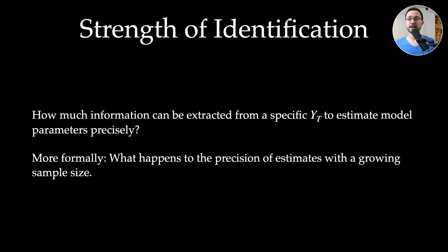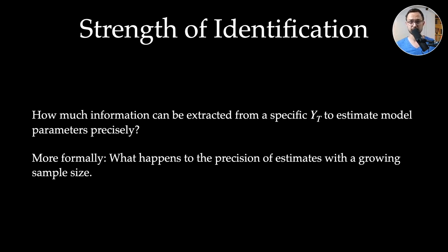Applied researchers are more concerned about the strength of identification: how much information can be extracted from a specific dataset to estimate parameters precisely. We want the variance of parameter estimates to be low — or equivalently, precision to be very high. We can measure weak identification by the rate at which precision improves for growing sample size. For a theoretically non-identified parameter, precision stays the same regardless of sample size; for a well-identified parameter, it updates at the rate of the sample size.